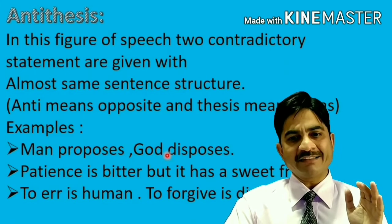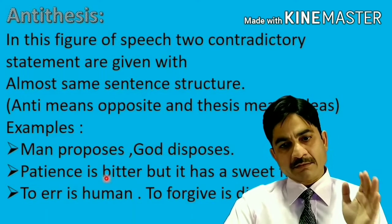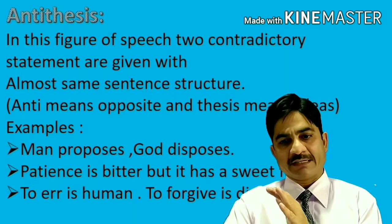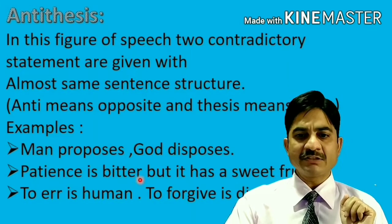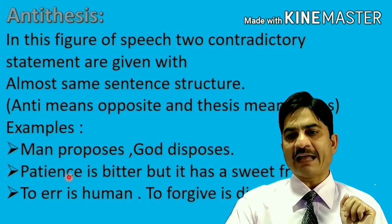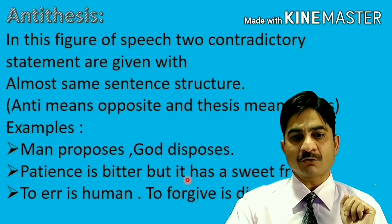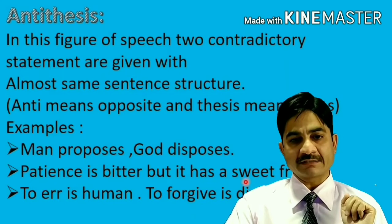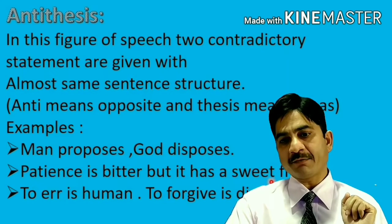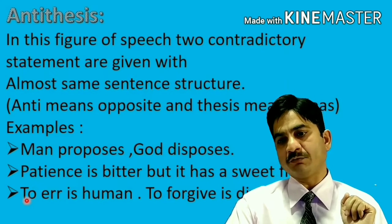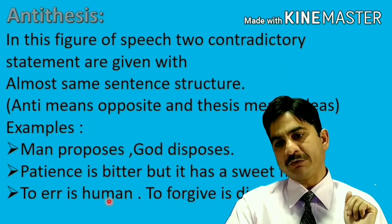For example: 'Patience is bitter, but it has a sweet fruit.' The first part of the sentence is 'Patience is bitter' and the second part is 'it has a sweet fruit.' Here 'bitter' and 'sweet' are the opposite terms placed in two different parts of the sentence.